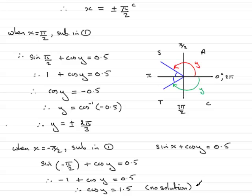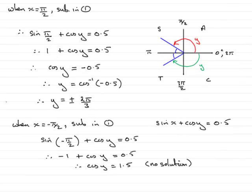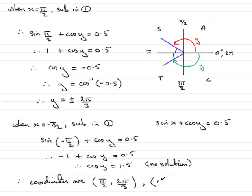So that means when x is pi upon 2, you get y values of 2 pi upon 3 and minus 2 pi upon 3. In summary, we're asked to find the coordinates where dy/dx equals 0 — in other words, stationary points. The coordinates are (pi upon 2, 2 pi upon 3) and (pi upon 2, minus 2 pi upon 3). That brings us to the end of question 5, part b.